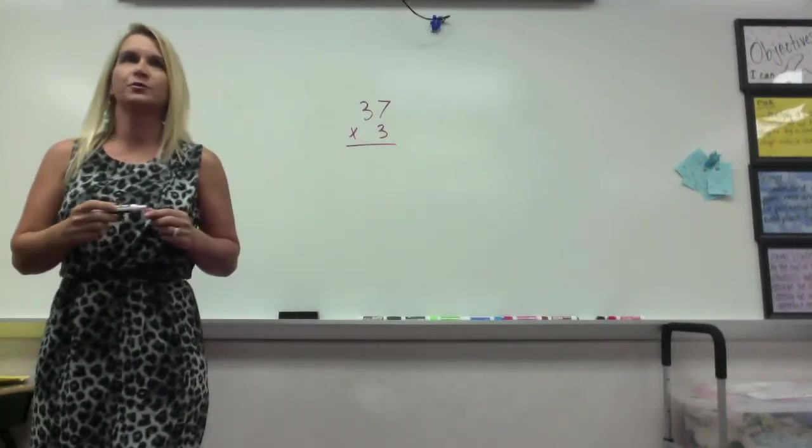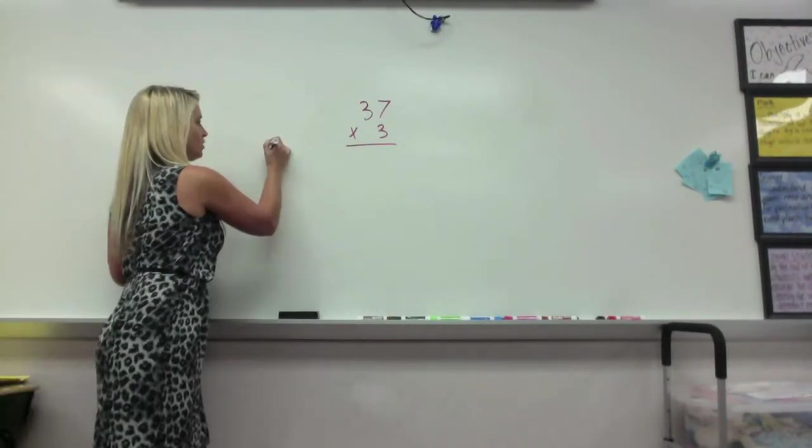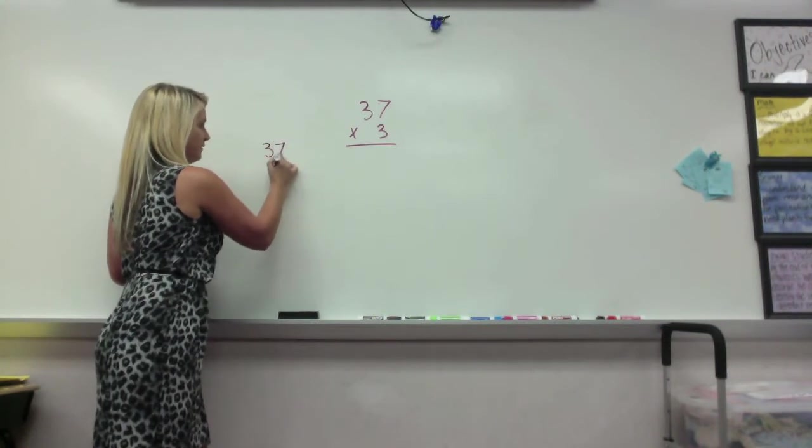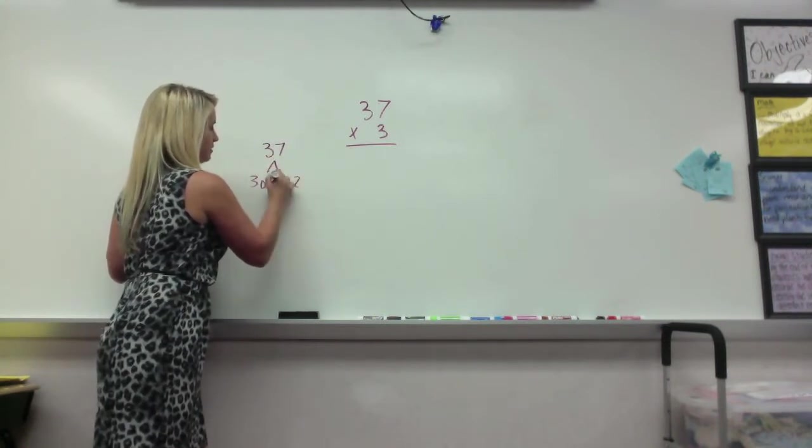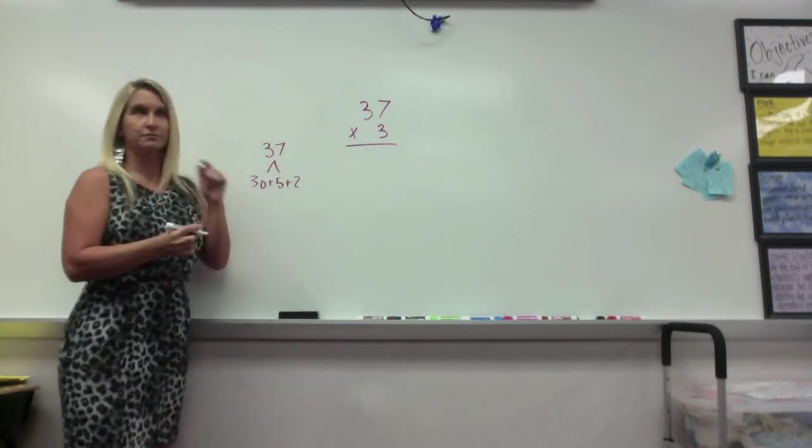Go ahead and do this one on your own. We're not doing groups this time. You did 37 equals 30 plus 5 plus 2. Remember, she likes to do numbers that work for her.